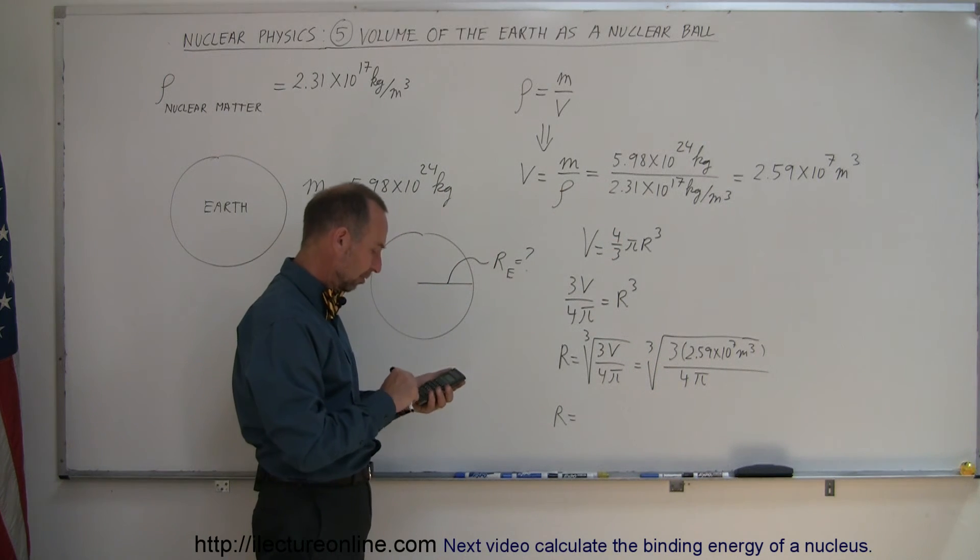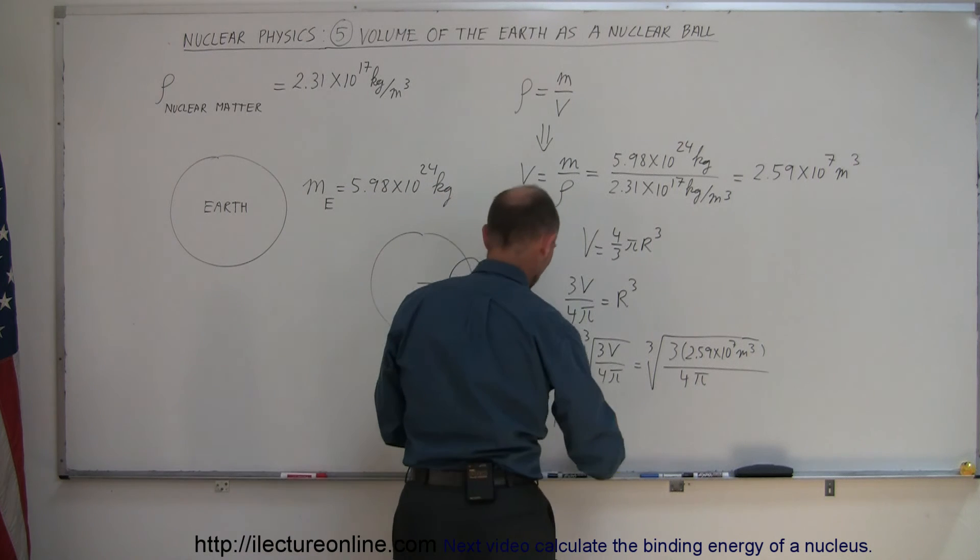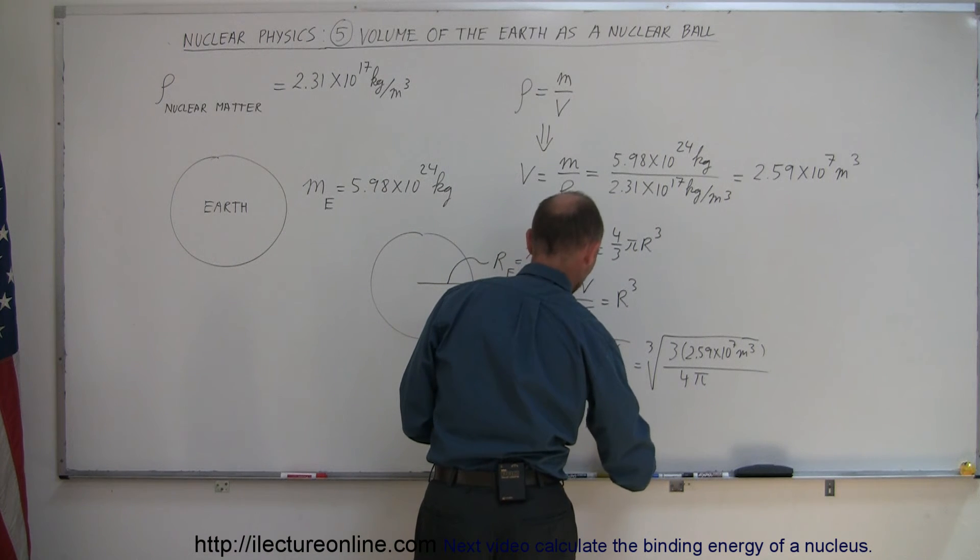So multiply that times 3, divide by 4, divide by pi, and then we take the cube root. And look at that. 184 meters.